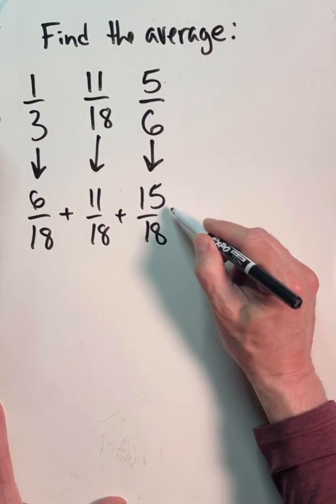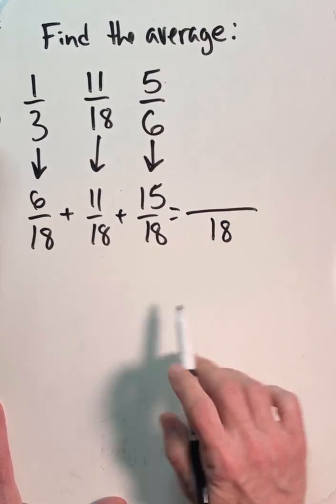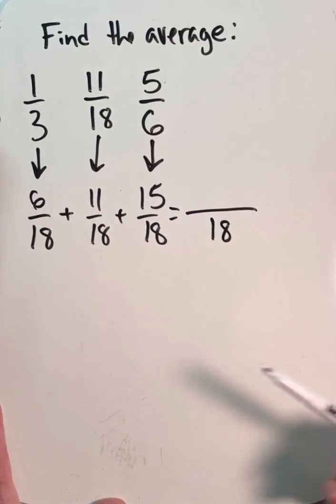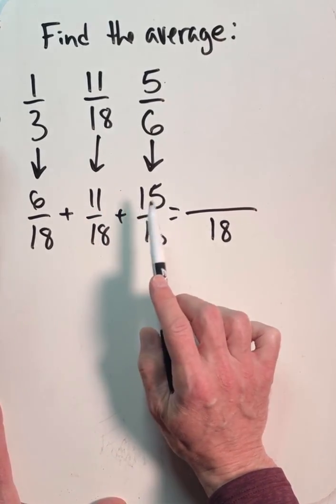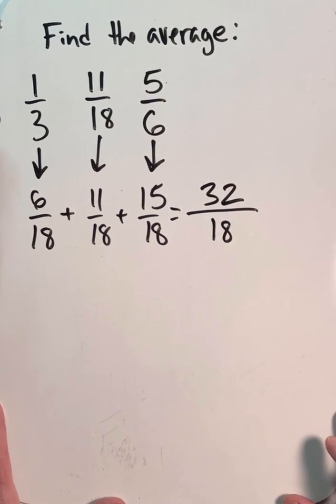So we'd really be adding all of these together. And again, when we add fractions with the same denominator, the denominator holds, and we just need to add up the numerators and put it over that. 11 plus 15 is 26. 26 plus 6 is 32. So we would have 32/18.